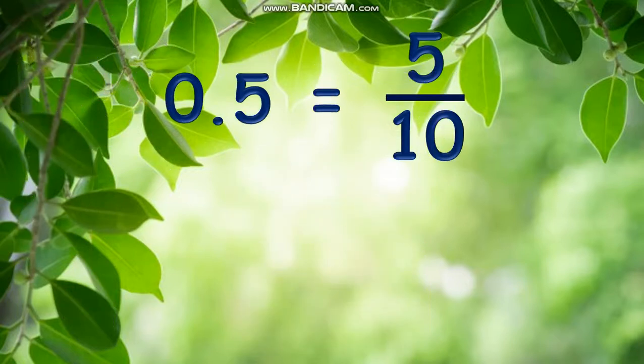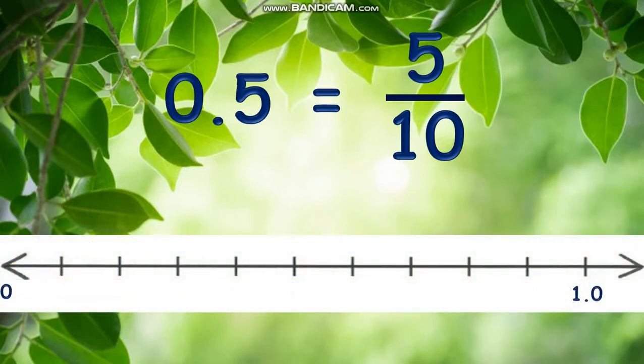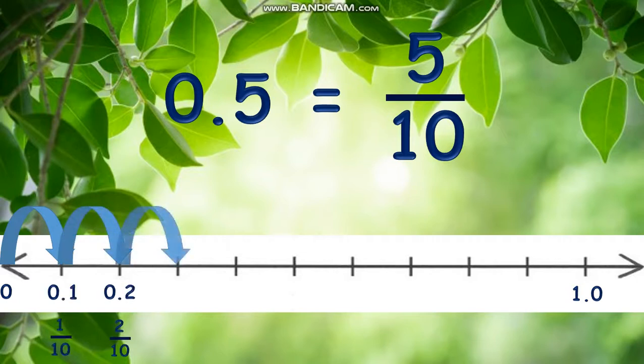To represent 0.5 or 5 tenths on a number line, divide the segment between 0 and 10 into 10 equal parts. The arrow jumps 5 equal parts from 0 to where it points, landing at 0.5 and equal to 5 tenths or 1 half in fraction form.